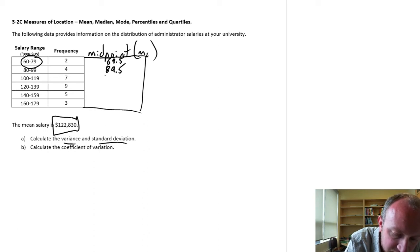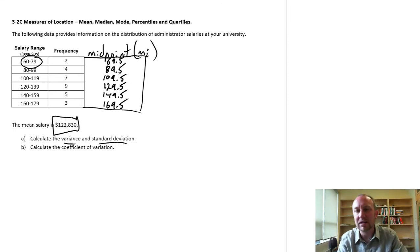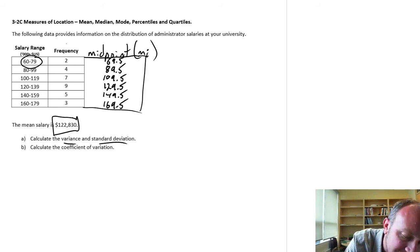and I know the midpoint for each of these is as follows: 89.5, 109.5, 129.5, 149.5, and finally 169.5. So those are our midpoints, the middle of each of the relevant classes. And we have here frequencies, and the notation we're going to use for the frequency is Fi.